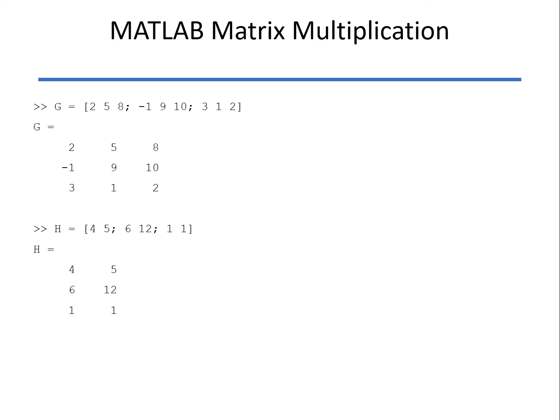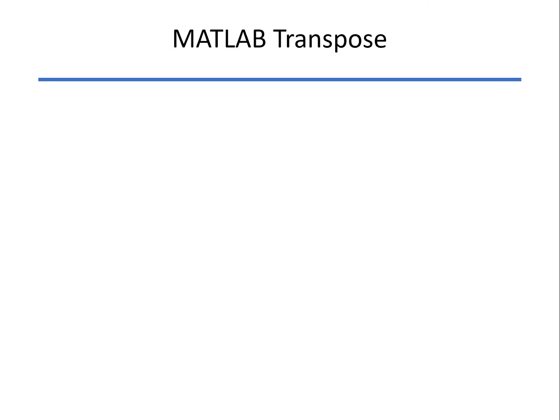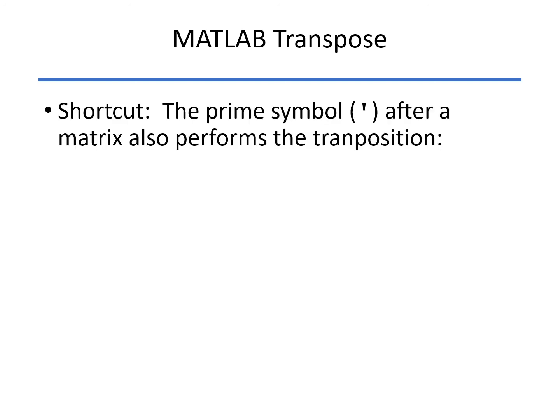Let's look at MATLAB here. Here are two matrices, G and H. To multiply the two, it's the same as if we were multiplying two scalars together. Just say G times H, and we get the resultant matrix. To do the transpose, there is a command just called transpose, or you can simply use the prime symbol here.